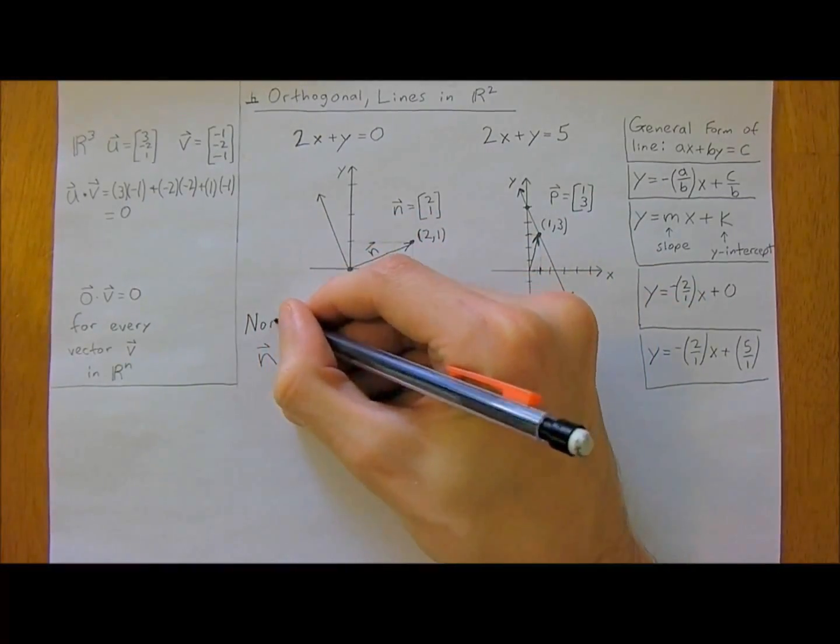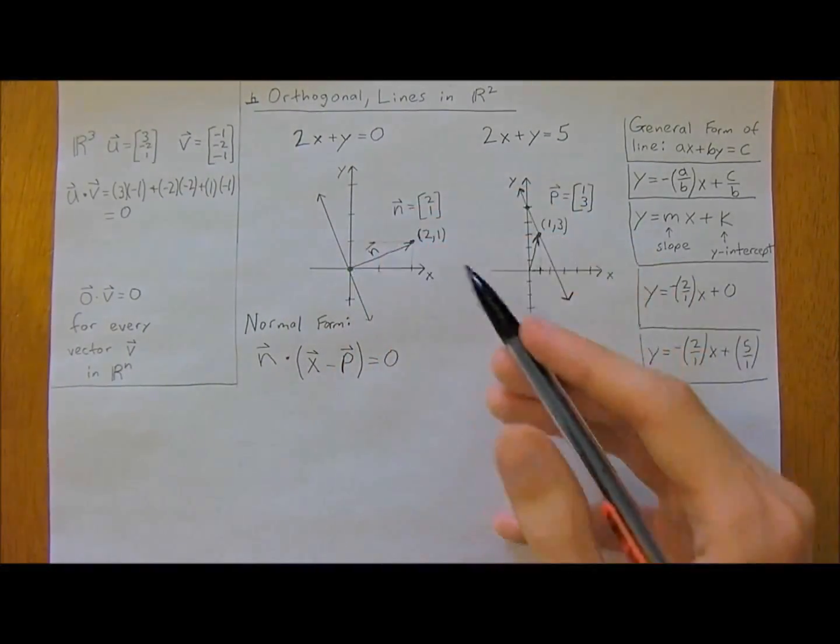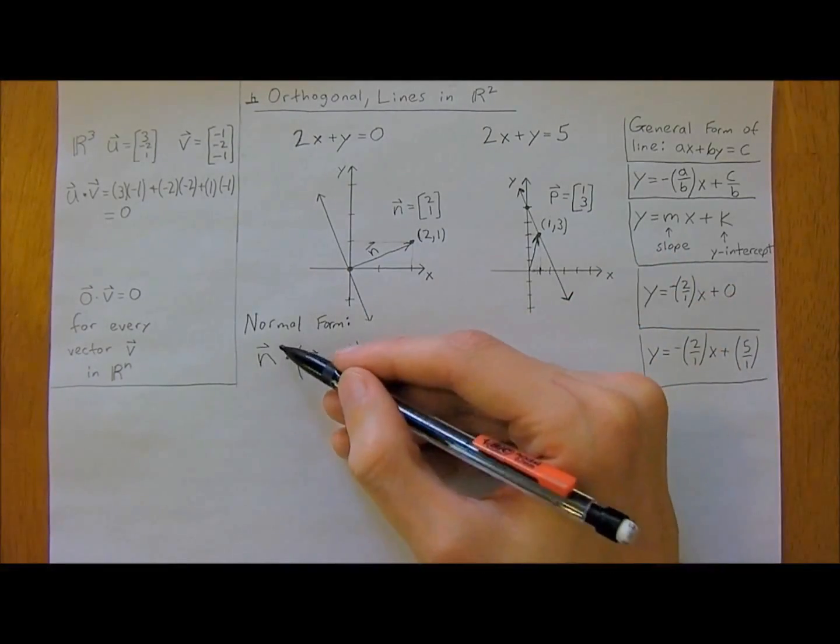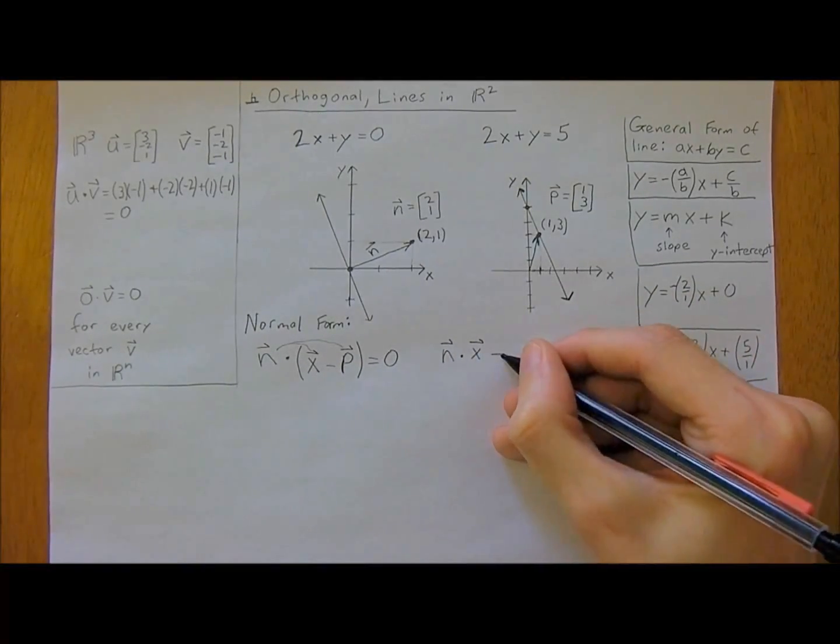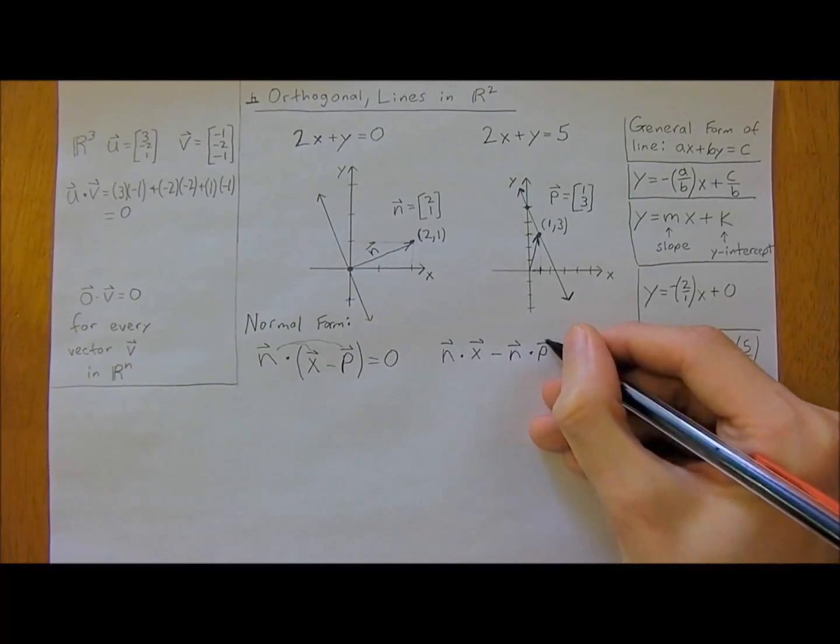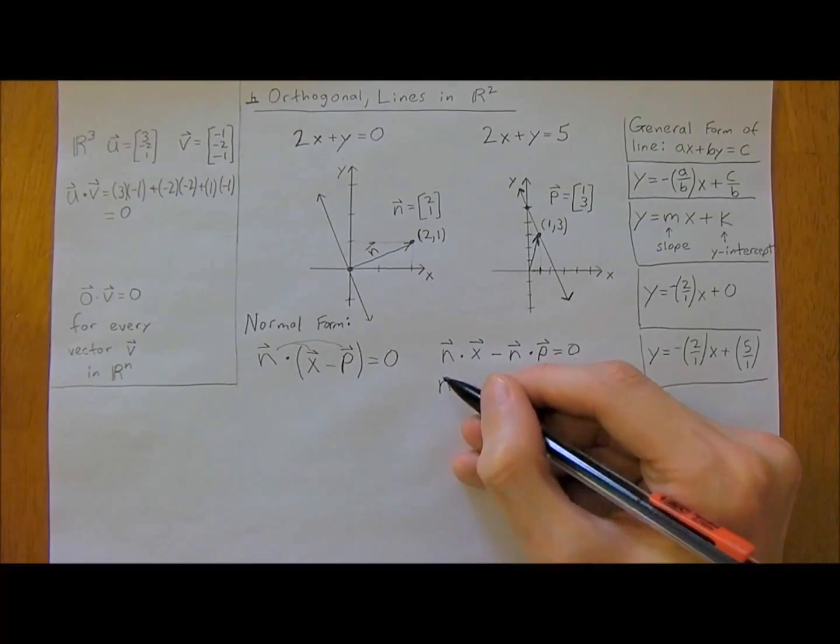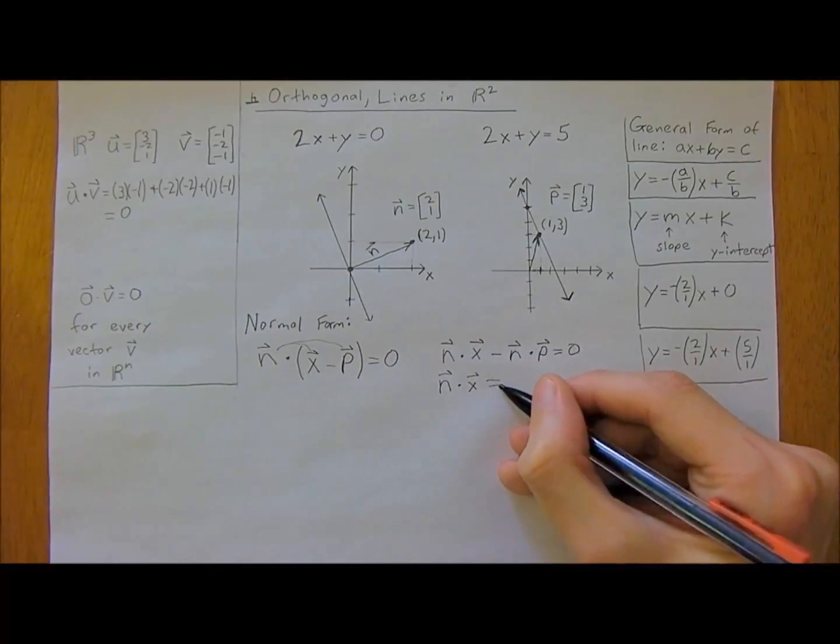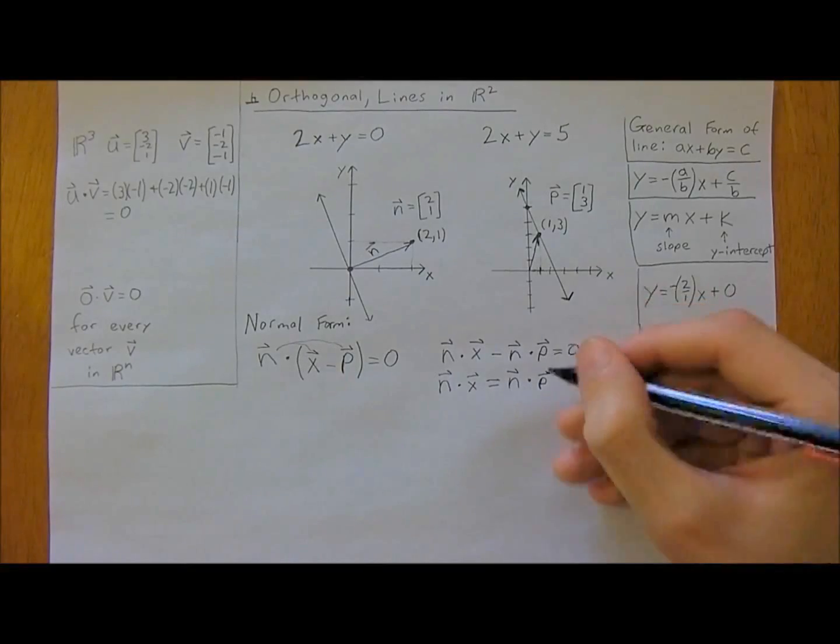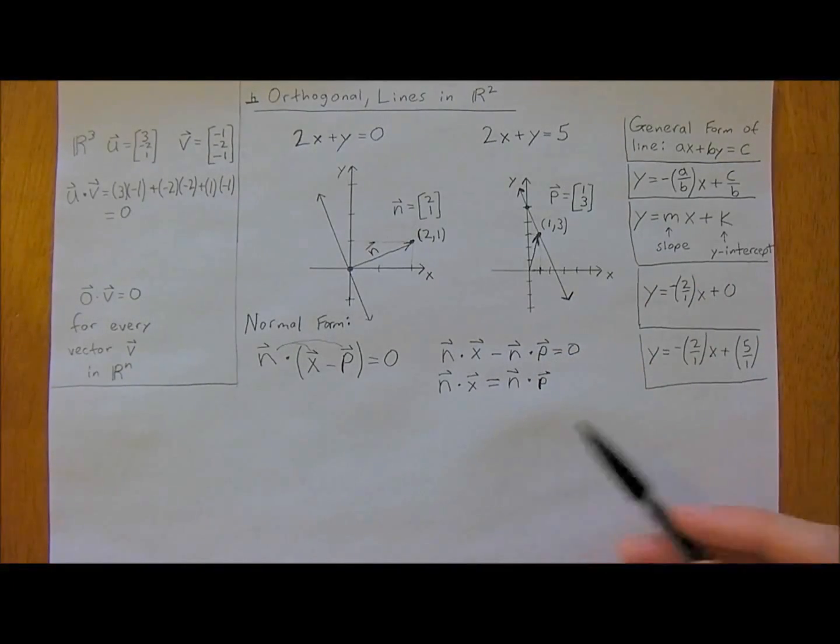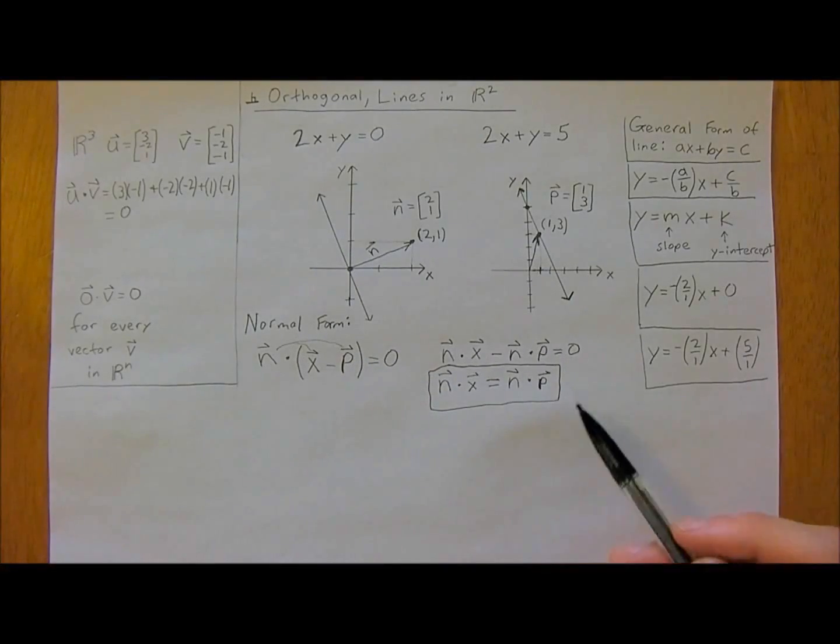Now we can do some stuff with this. This is called the normal form. Another way you can represent this is if you just multiply like this, then we get n dot x minus n dot p equals 0. And often you just add n dot p to both sides of the equation. So another way which I remember most easily is n dot x equals n dot p. Those are the three ways this is commonly displayed. Now let's work with an example of this using the normal form.